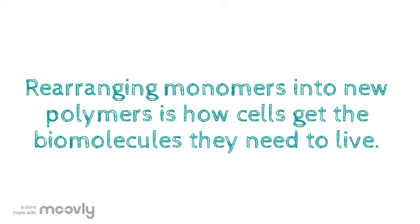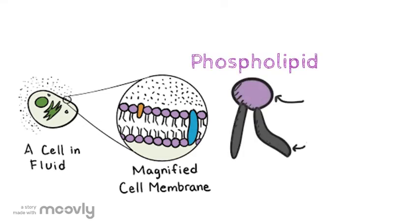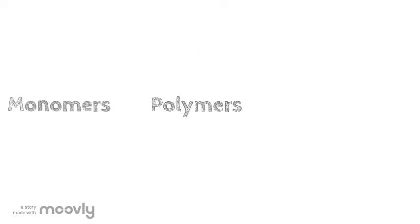In this way, your cell can make the biomolecules it needs to grow and perform its function. The cell membrane is made out of a lipid called phospholipid. If your cell needs to make more cell membrane, it will take in fatty acids and combine them into phospholipids. The process of turning monomers into polymers is called biosynthesis.